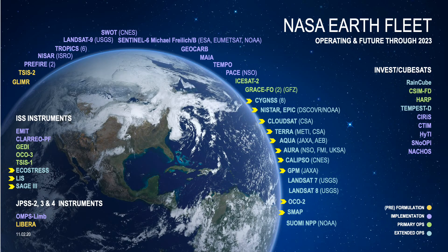NASA actually has quite a large number of Earth observing satellites in our Earth fleet as shown here. We have over 18 different satellites that are focused on different components of the water, energy, and carbon cycles.